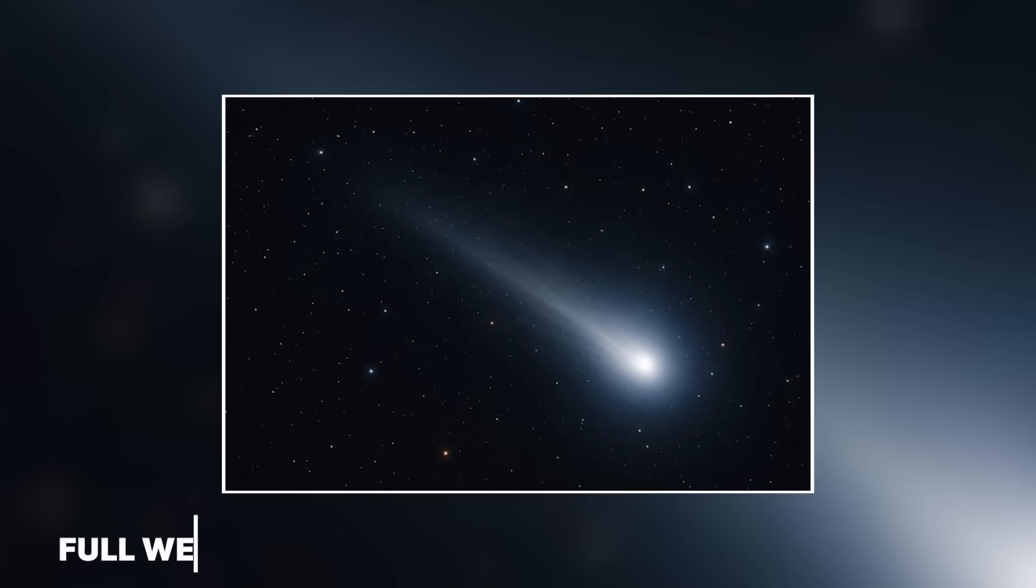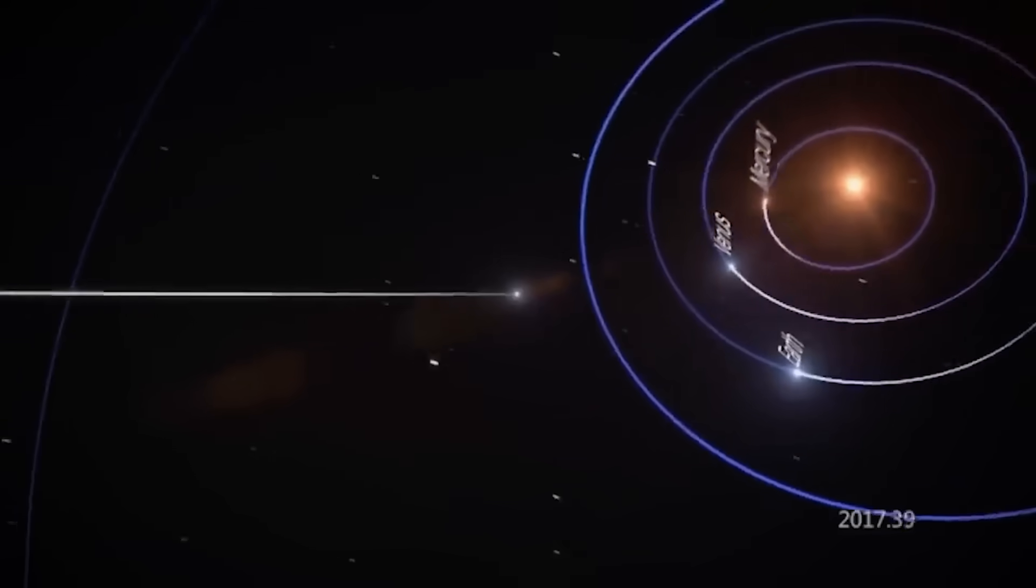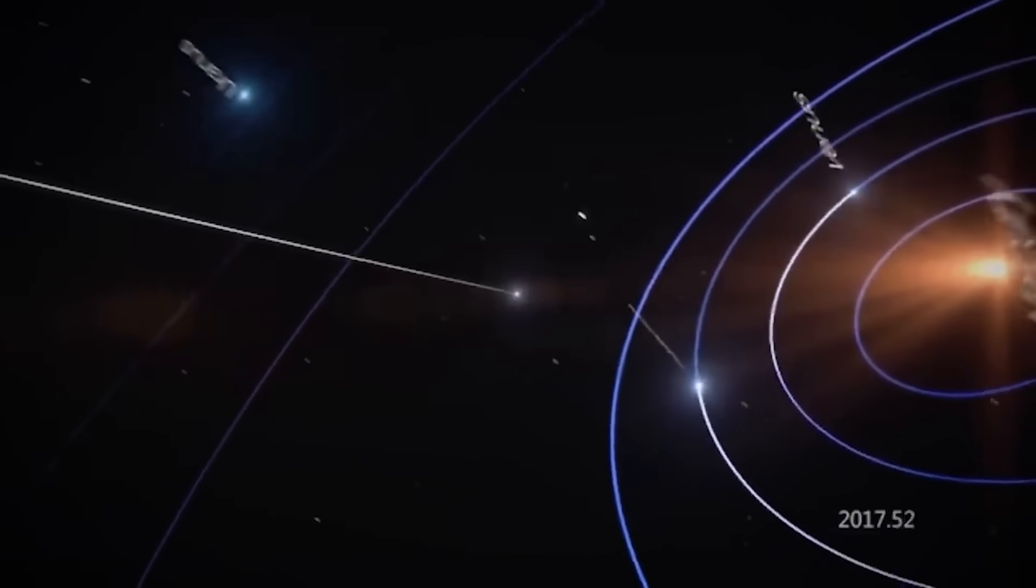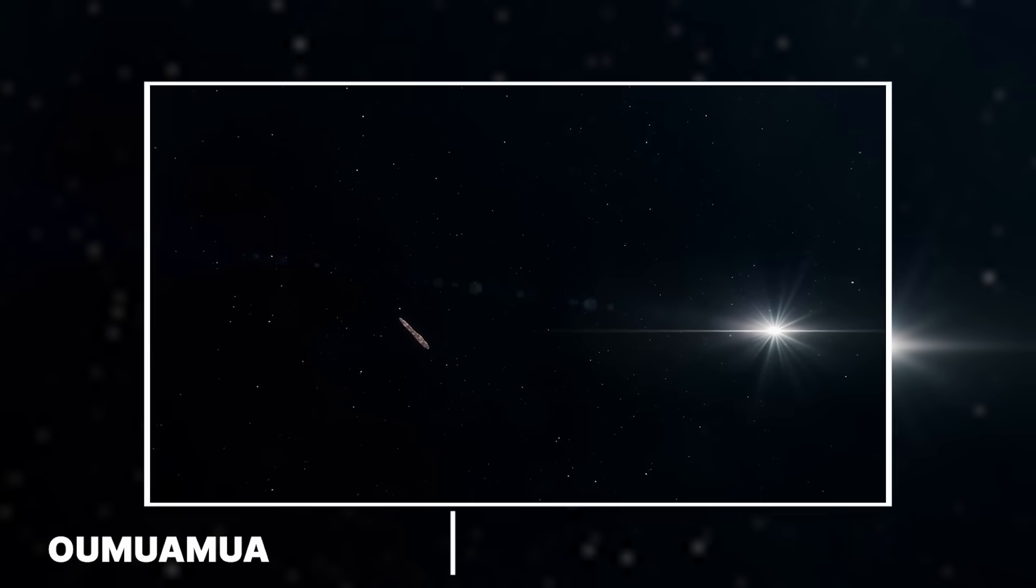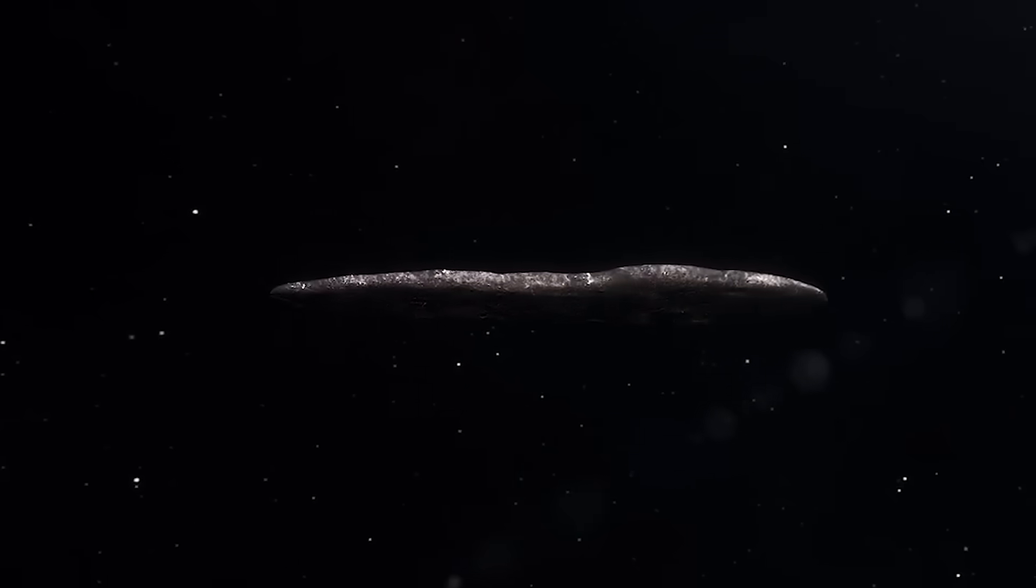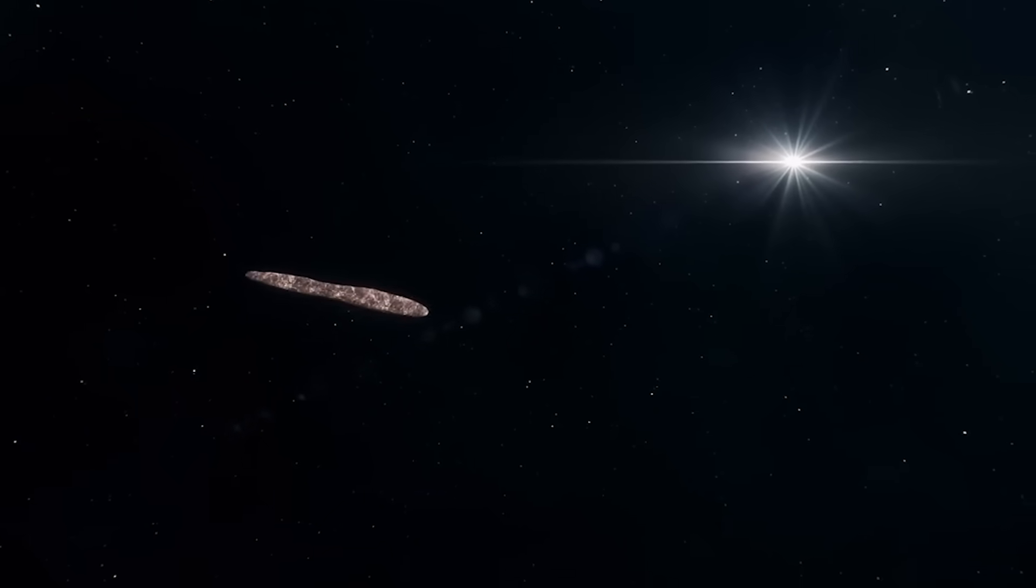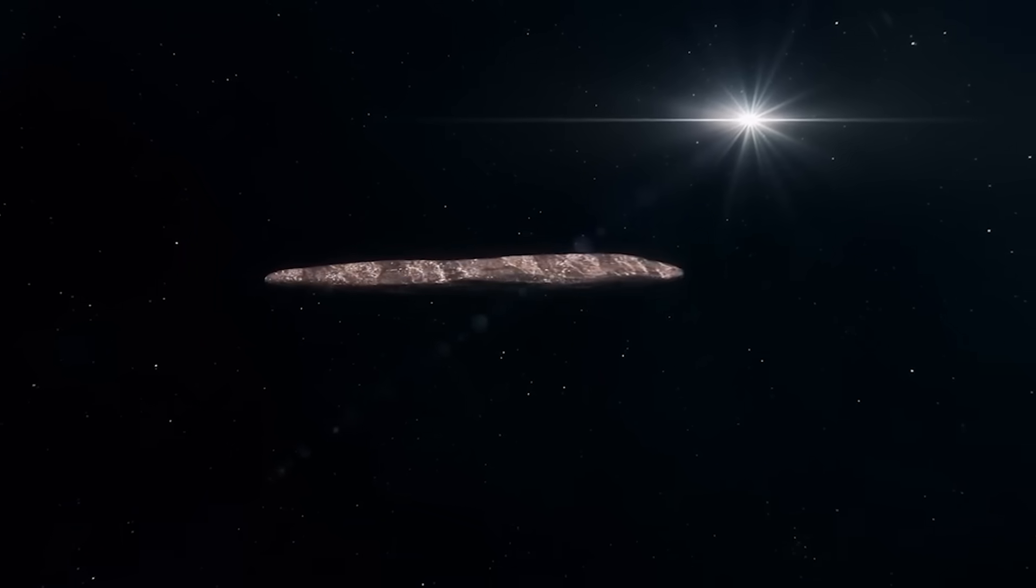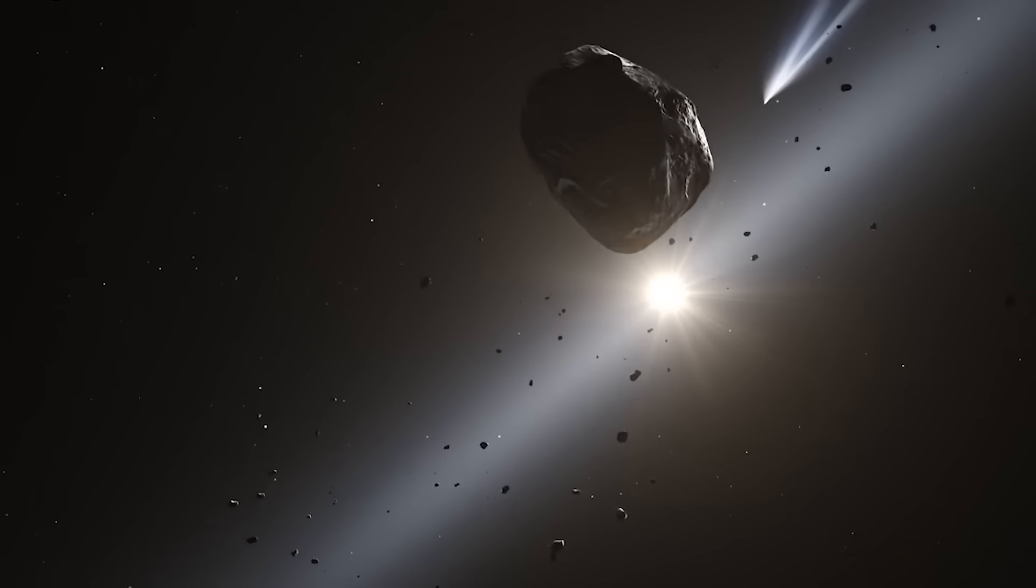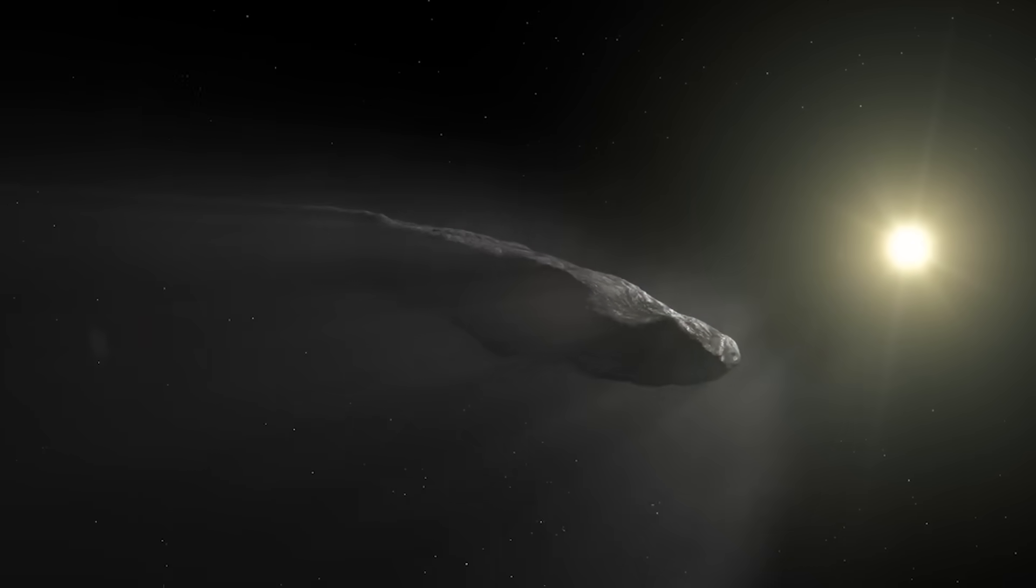They are not random. To understand the full weight of the 3-I Atlas mystery, we have to rewind the clock to 2017. That's when the first ever confirmed interstellar object, a bizarre, cigar-shaped anomaly named Oumuamua tumbled through our solar system. Oumuamua, which means a messenger from afar arriving first in Hawaiian, was a complete shock to the system. It was moving too fast to have come from our sun's neighborhood, and its shape was unlike any asteroid or comet we had ever seen.